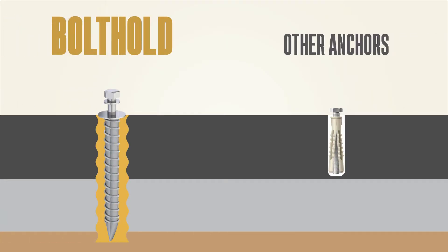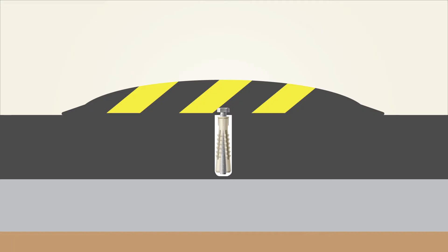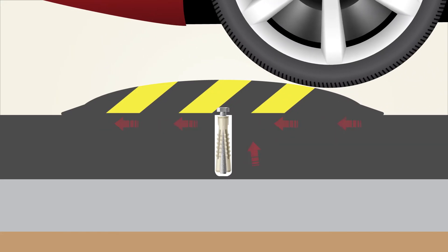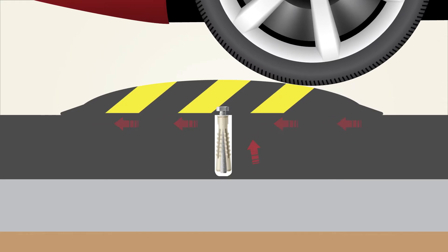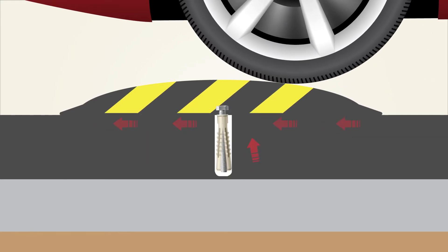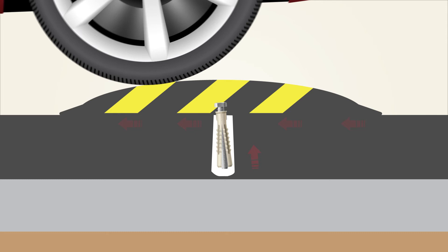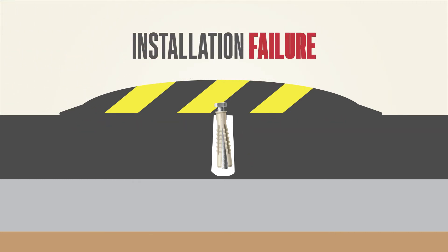To understand the differences between bolt hold and other anchors, let's look at the forces exerted by speed bumps as an example. As a vehicle drives over the speed bump, the weight and motion of the car attempt to push the speed bump forward, which in turn tries to pull the anchors out and forward. These forces, repeated hundreds of times per day, can cause conventional anchors to enlarge the hole in the asphalt, which can lead to loosening and installation failure.